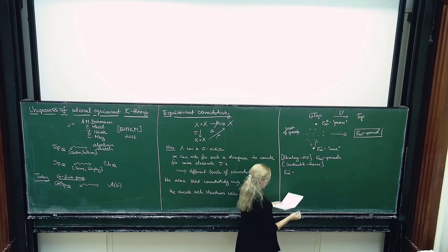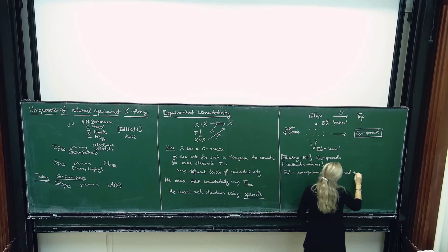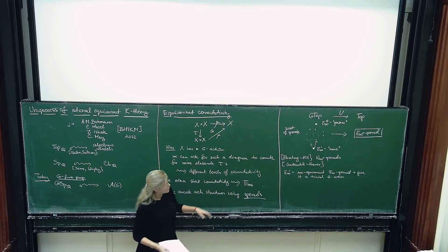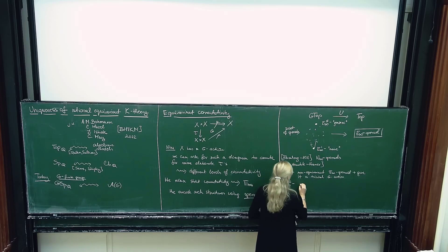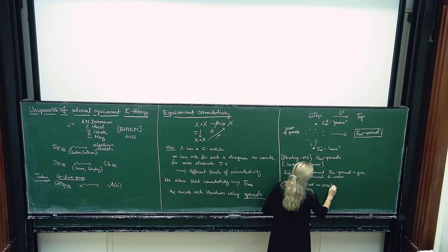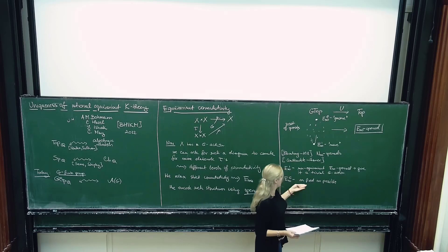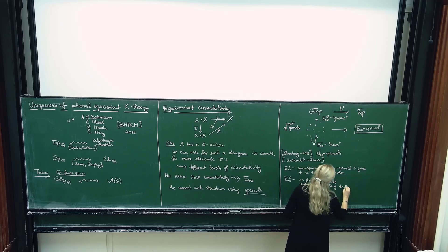For E-infinity-1, you can take a non-equivariant E-infinity operad and give it a trivial G-action. This guy turns out to be as free as possible — it is going to map to all the others. On the other hand, E-infinity-G is as fixed as possible. The sigma_N still has to act freely because it still has to forget down to the E-infinity, so there are some restrictions on the fixed points, but it is as fixed as possible while still forgetting to E-infinity.